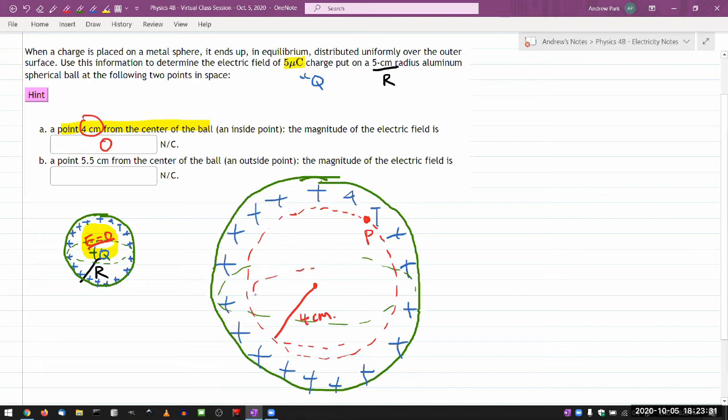Then you consider a Gaussian surface that's spherically shaped so that it matches the symmetry of the setup that contains that point. So you are considering Gaussian surface of radius four centimeters. Then you go through the application of Gauss's law and finding the electric field at this point. You have the Gauss's law, the net flux through that Gaussian surface is equal to Q enclosed times four pi K, the Coulomb constant.